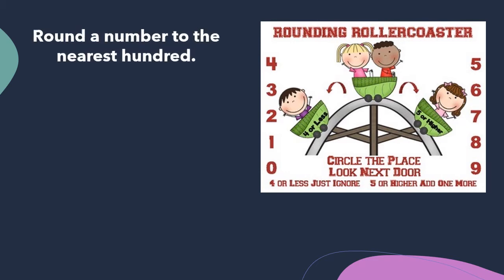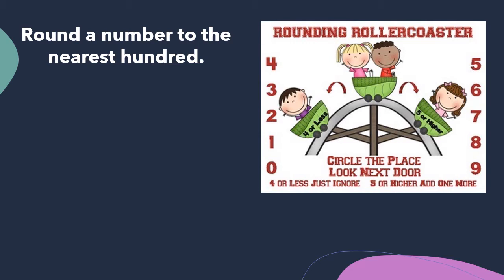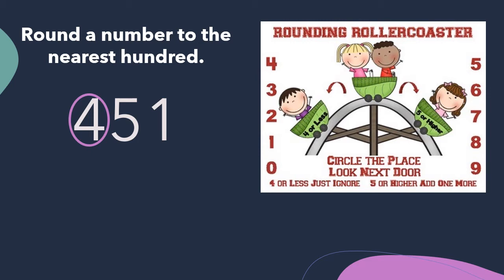What about the direction to round a number to the nearest hundred? We're going to use the same poem and the same number, 451. Circle the place — the place that we're rounding to is the hundreds place, so we're going to circle the four, the digit in the hundreds place. Circle the place, look next door. We're looking at the digit to the right. This is the digit that becomes the boss digit. You'll notice that five is on the side of five or higher. So circle the place, look next door, five or higher, add one more.